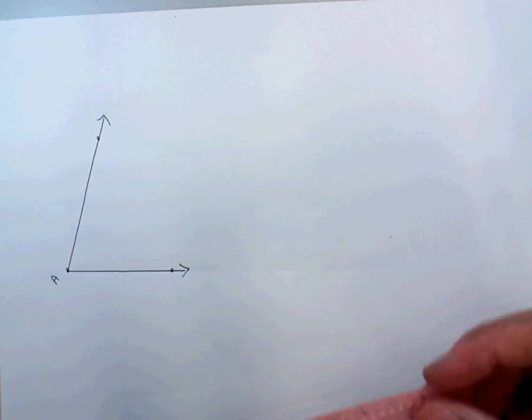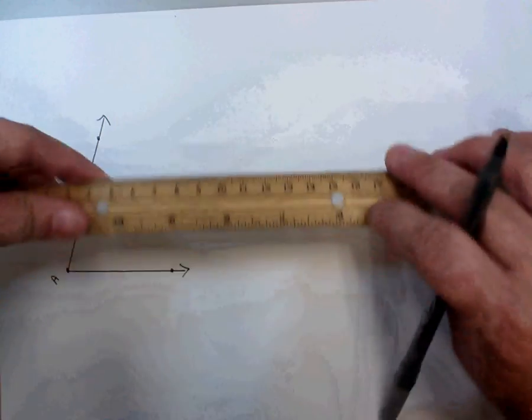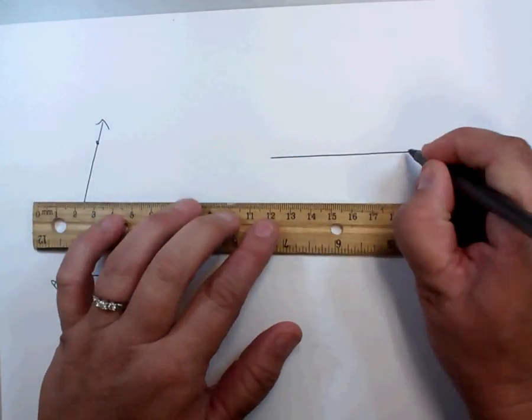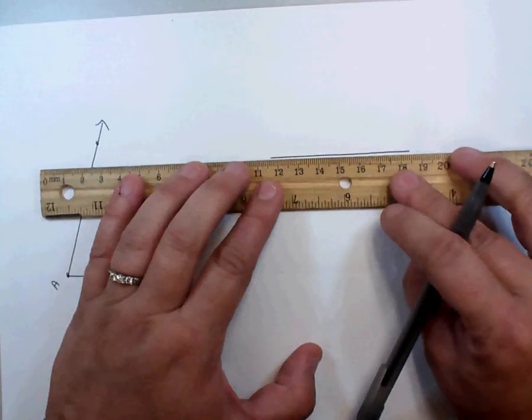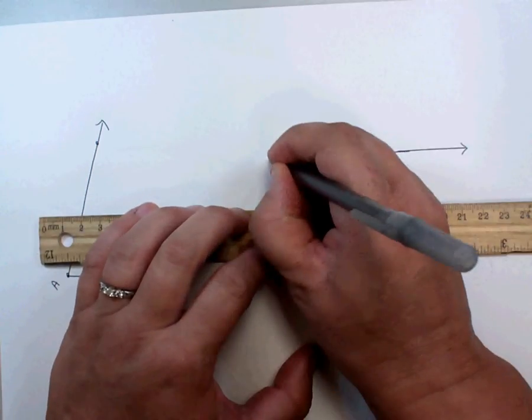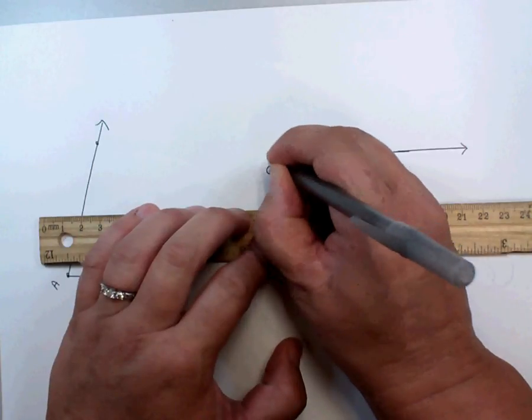With our straight edge, we're going to also draw a ray that has an endpoint G. This is going to become our new angle.